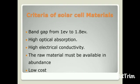Criteria of solar cell materials: Band gap should be 1 eV to 1.8 eV. It should have high optical absorption and high electrical conductivity. The raw materials must be available in abundance and low cost.